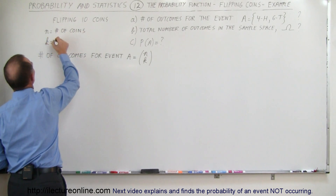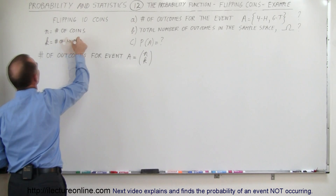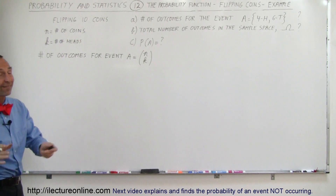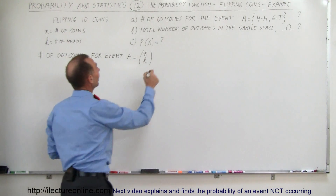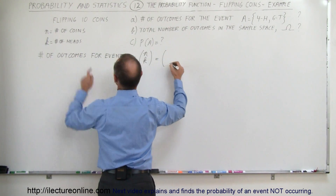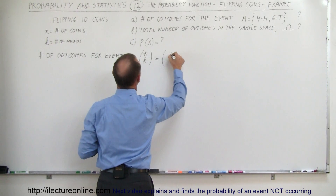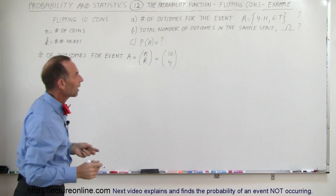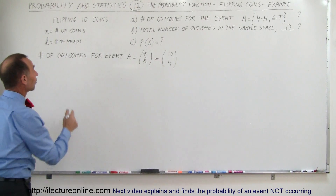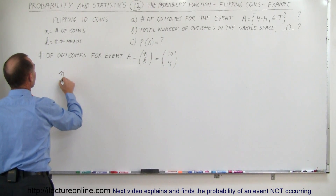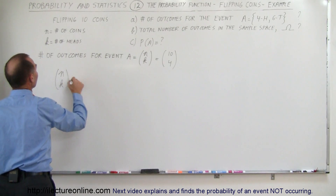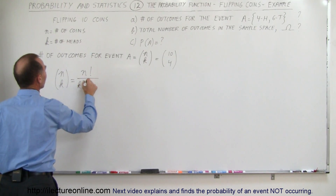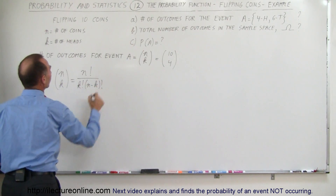K equals the number of heads — though you could also have K be the number of tails; it really doesn't matter, you would get the same result. So in this case, this is equal to N equals 10 and the number of heads is 4. The general equation for N over K written in parentheses is equal to N factorial divided by K factorial times N minus K factorial.